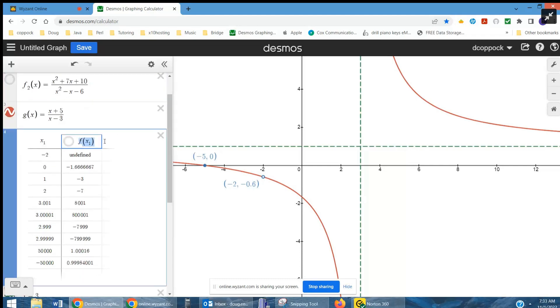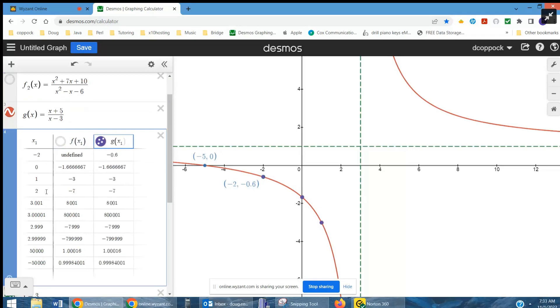And if I add a column to this table, you'd see that g of negative 2 gives us an answer of negative 0.6, but f of x of 1 is undefined. That's why we have a hole there. And there's the root.